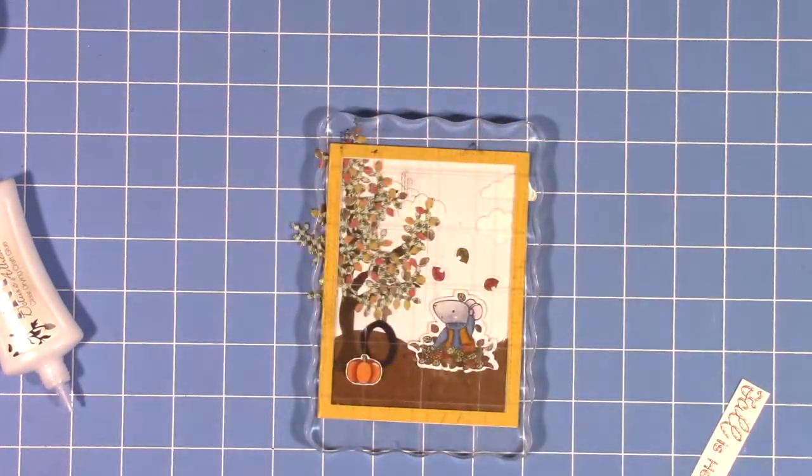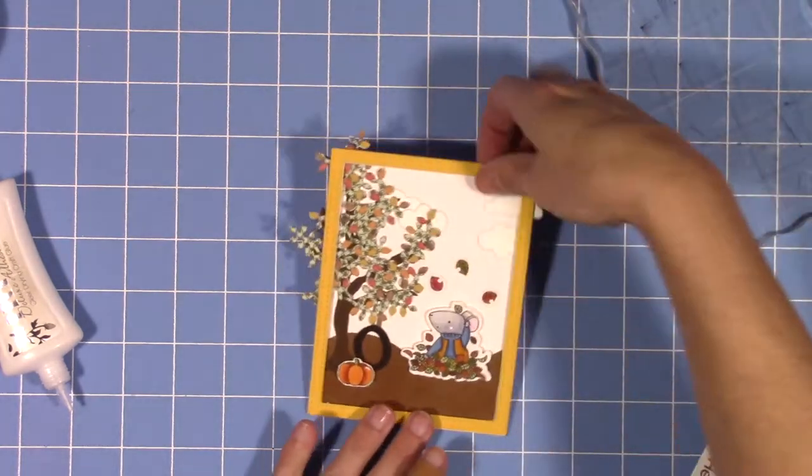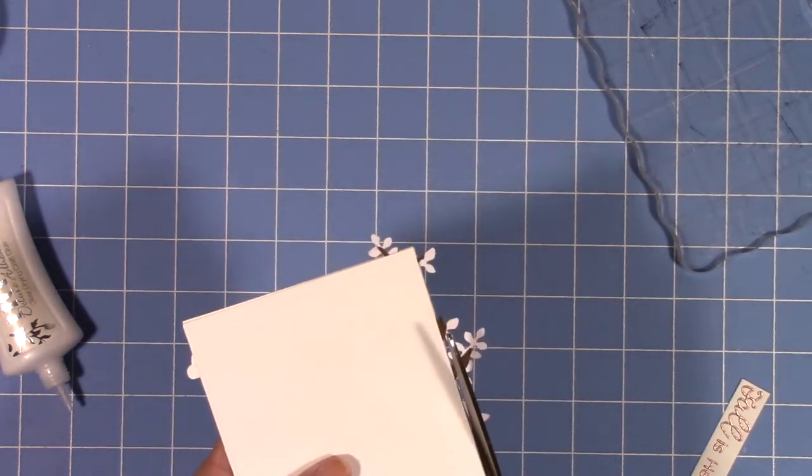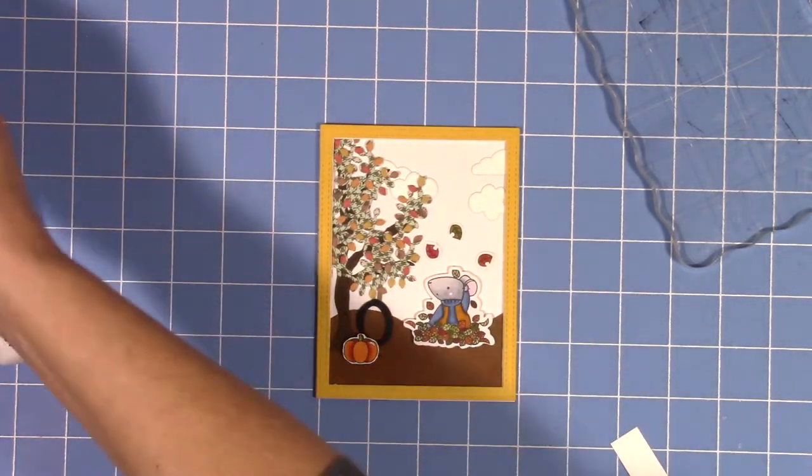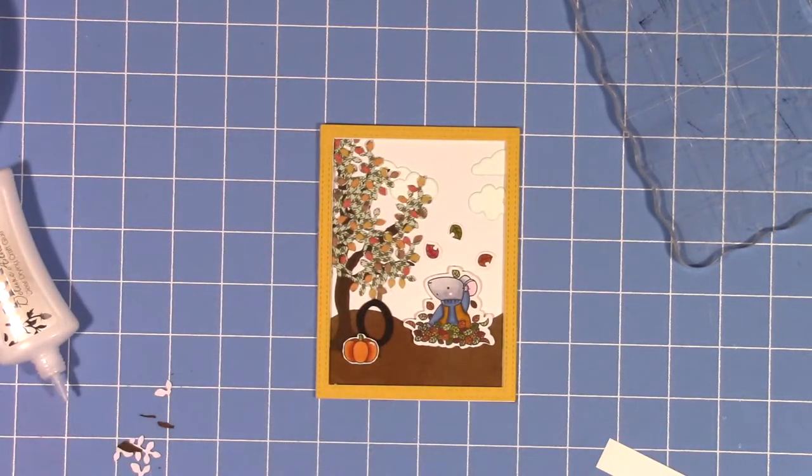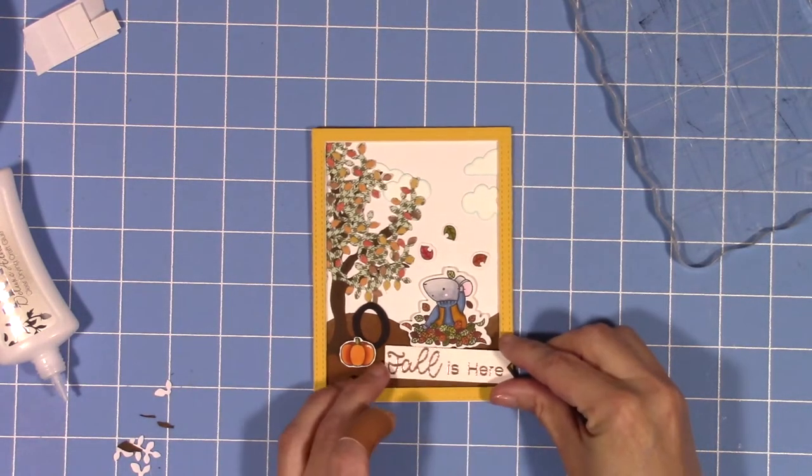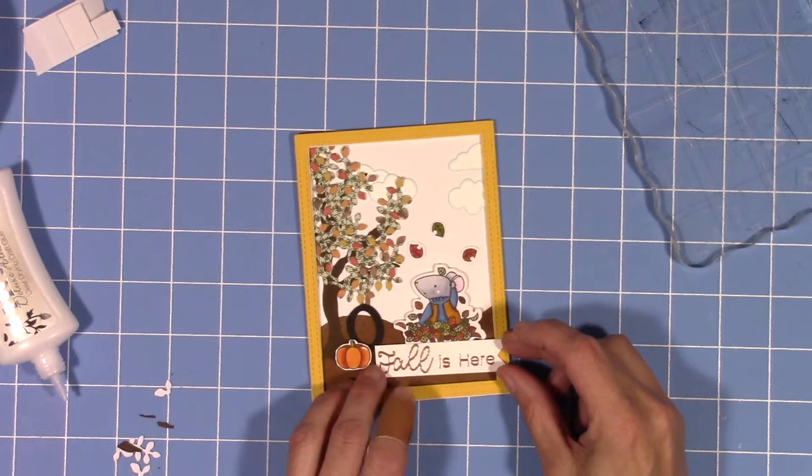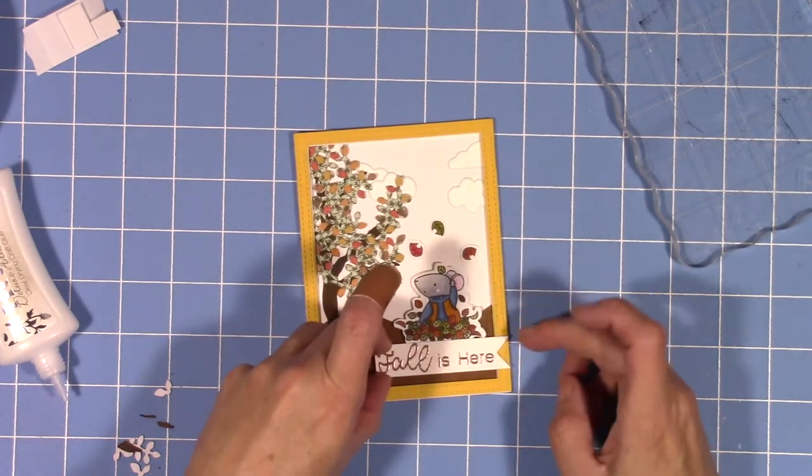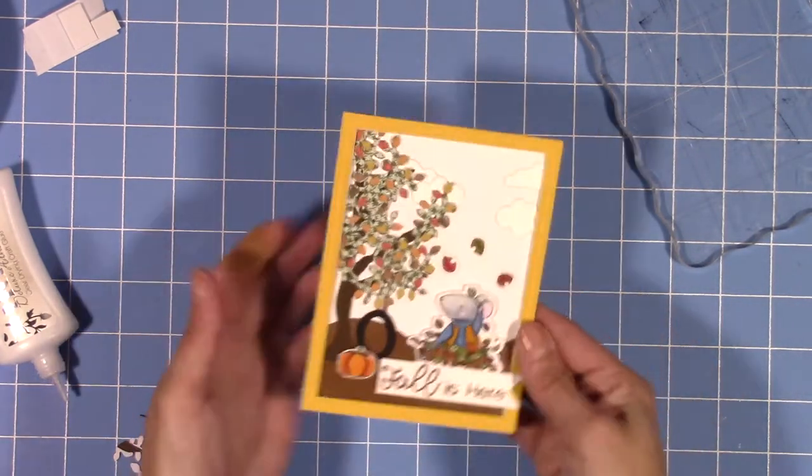The sentiment on the side is 'fall is here' and that is from the Simon Says Stamp greeting farm collaboration from last year. I embossed it with the copper blush embossing powder by Nuvo, so it's kind of sparkly and coppery and looks very fall and pretty.